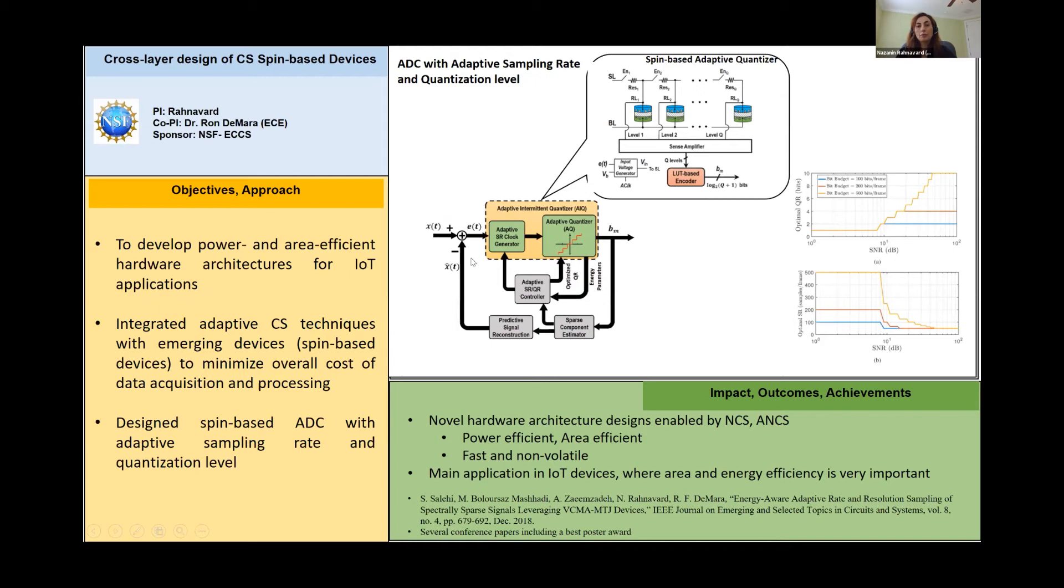And here is showing a design for an analog-to-digital converter which uses the adaptive compressive sensing for adaptive sampling data and quantization level, which also uses the spin-based architecture that is developed in Professor Di Mara's lab.